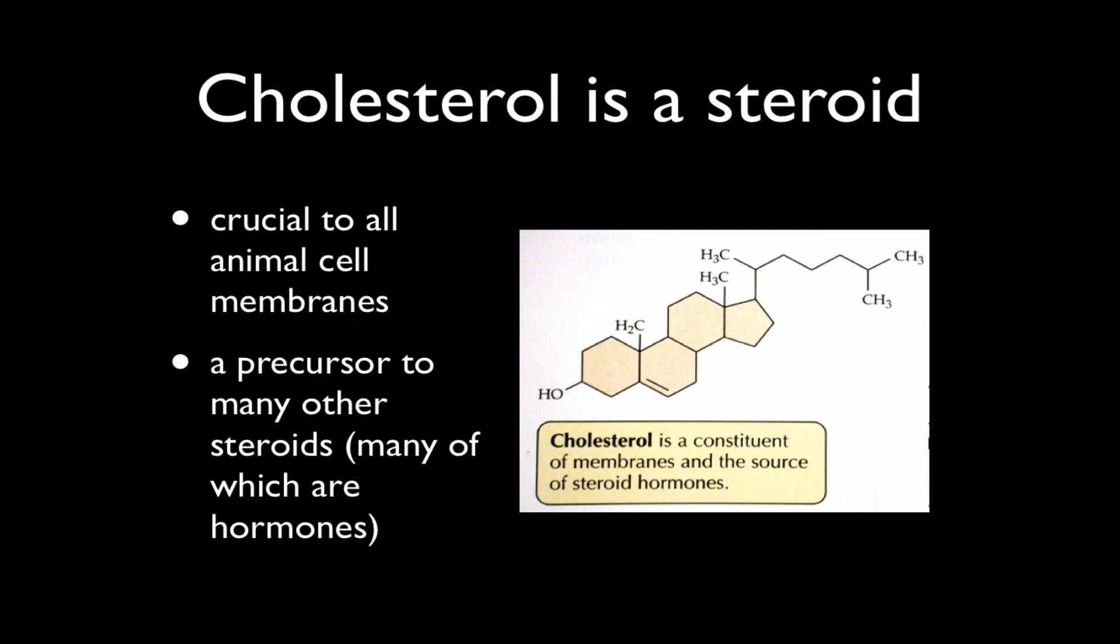Cholesterol is a steroid that is used by cells as a raw ingredient for making other steroids, like some hormones. So we call it a precursor. That's a good word to add to your vocabulary right now. So the body starts with cholesterol and from cholesterol it can build lots and lots of other types of molecules.